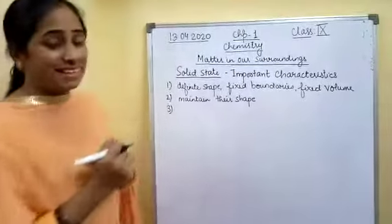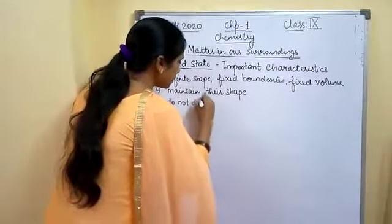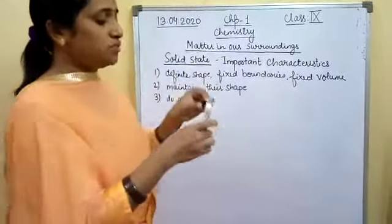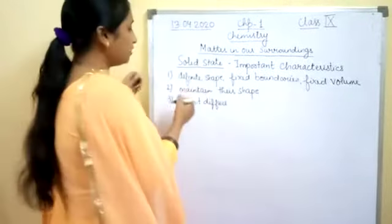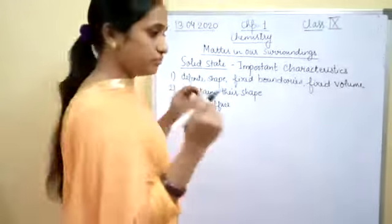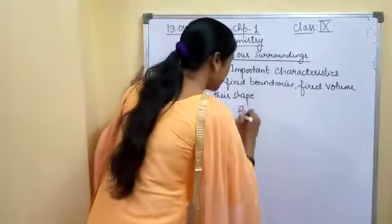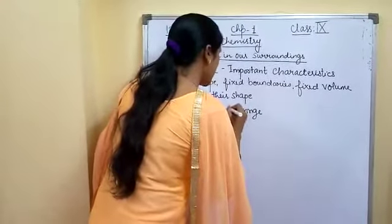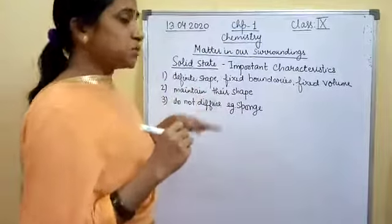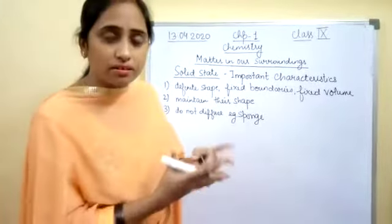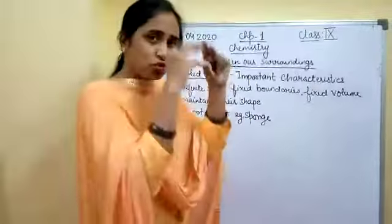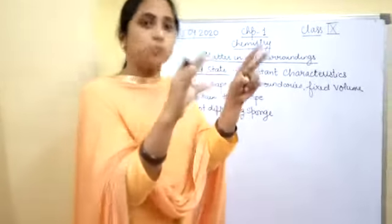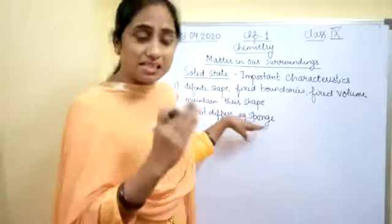The third important characteristic is they do not diffuse, or they diffuse very slowly. Suppose if I try to diffuse this pen into this body, it is not able to diffuse — that means they have a rigid boundary which does not allow diffusion to occur. But in the exam, one example is there of a sponge. They ask: classify sponge as a solid and justify your answer. Sponge has got minute pores in it, so once you press it, the air inside those minute pores is expelled out, and that is why sponge is considered a solid.